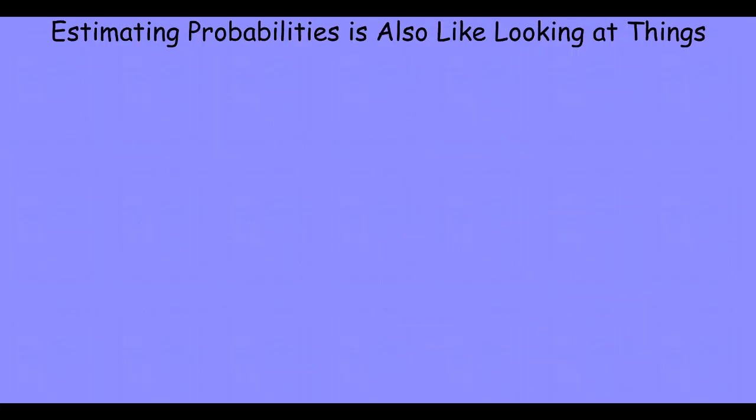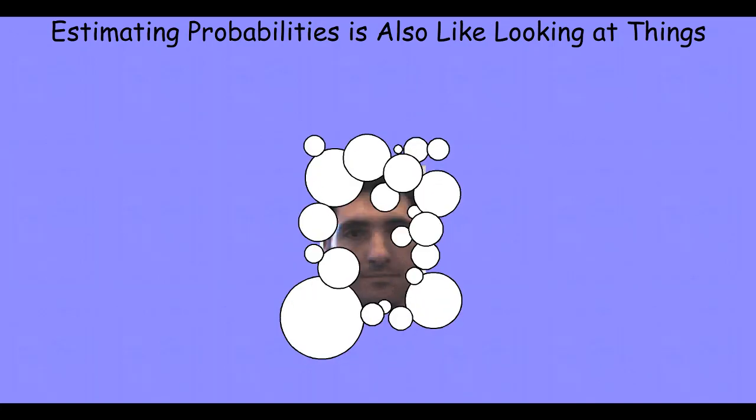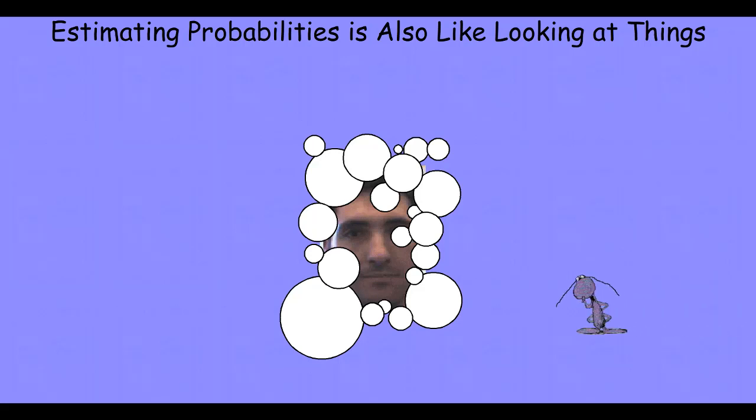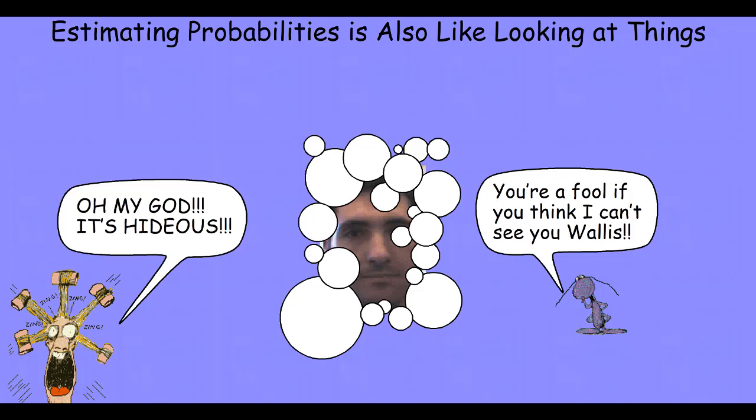We do similar things when we recognize objects and faces. So even though this face is partially occluded, taken from a picture that is literally decades old, you can still recognize it as me. You can extrapolate from that partial and corrupt data to see who it is. And, of course, that it's hideous.